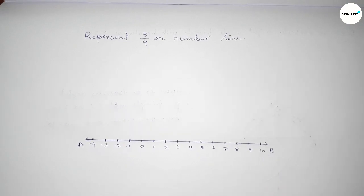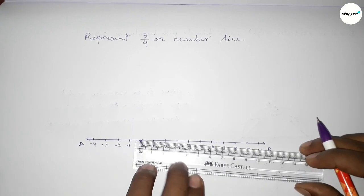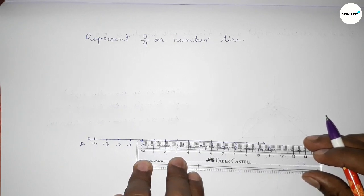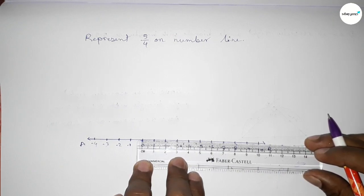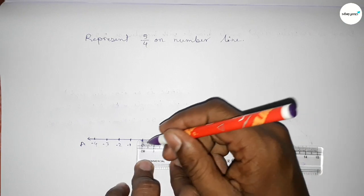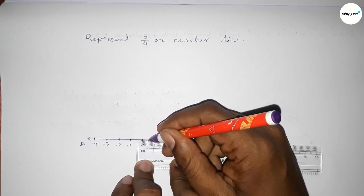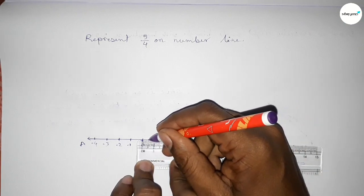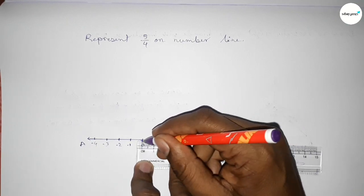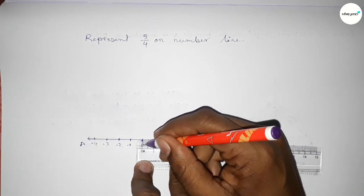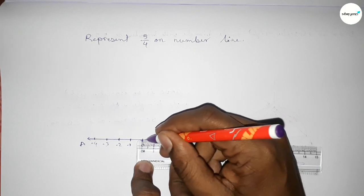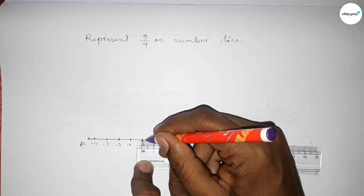Now we have to divide the distance between any two numbers into four equal parts. First we divide the distance between zero and one into half, then taking the half between the two parts. This is the half between zero and zero point five, so this is approximately zero point two five.